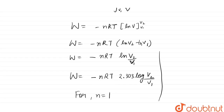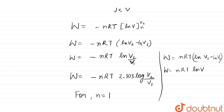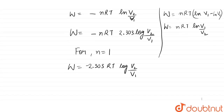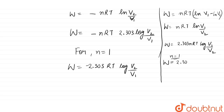Alternatively, taking the negative sign inside, work done also equals nRT ln(V1/V2), which gives 2.303RT log(V1/V2) with no negative sign. So the two equivalent forms are: W = -2.303RT log(V2/V1) and W = 2.303RT log(V1/V2).